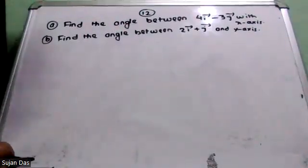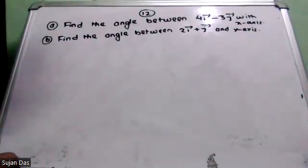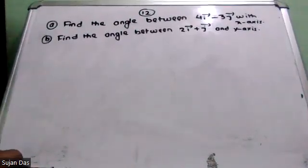So, the question is: find the angle between the vector 4i minus 3j with the x-axis.